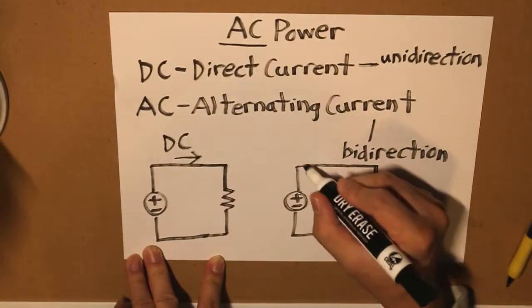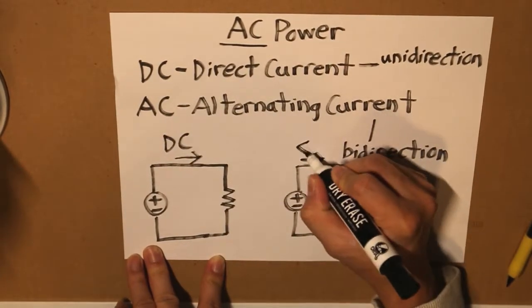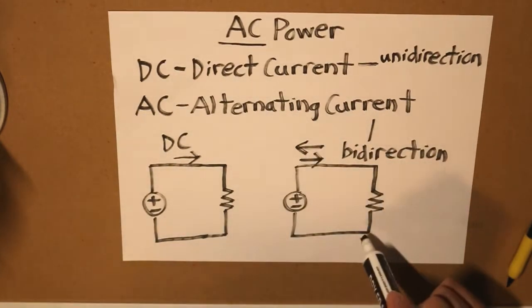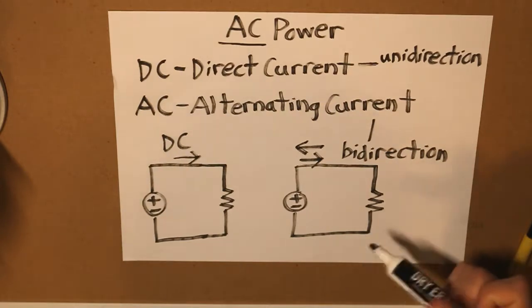And here you can draw two different arrows, one traveling clockwise and one traveling counterclockwise. And that can be described as AC.